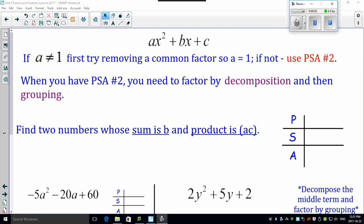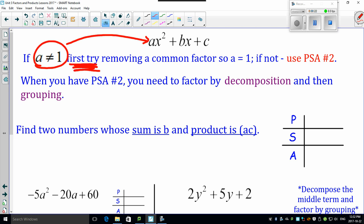Let's continue our journey into PSA 2. The big identifier for PSA 2 is that first term, the a term, is no longer 1. But before you go headlong into PSA 2, always try first to remove a common factor. Don't give up on GCF. That's gonna save you an abundance of time because if you can GCF it, you make the a equal to 1 and you're just gonna use plain old PSA 1.